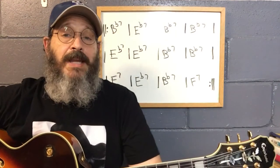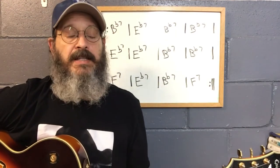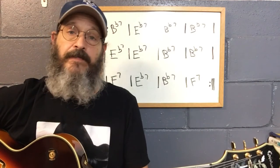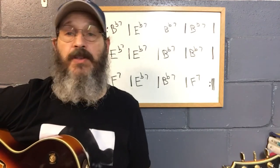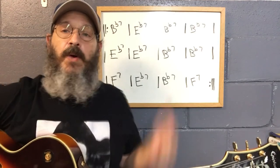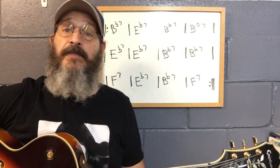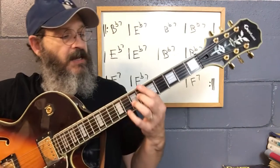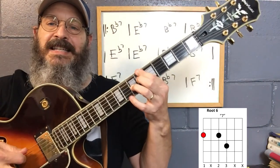So what is a shell voicing? Out of the four notes which make up a dominant seventh chord — a root, a third, a fifth, and a flat seven — a shell voicing uses only the one, the three, and the flat seven. So if we go back to our blues progression in B-flat, our B-flat seven, or one, which is a root-six shell voicing, will look like this.